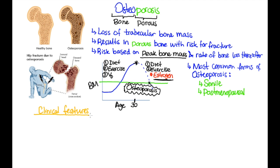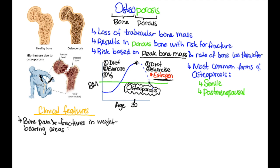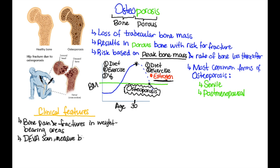The clinical features of osteoporosis include bone pain and fractures in weight-bearing areas such as the vertebra, giving you loss of height and kyphosis. The hip has an increased risk of fracture, as does the distal radius. If you want to monitor a patient's bone density, you can use something called the DEXA scan, which allows you to determine where you are on this chart to see how much bone mass you actually have.